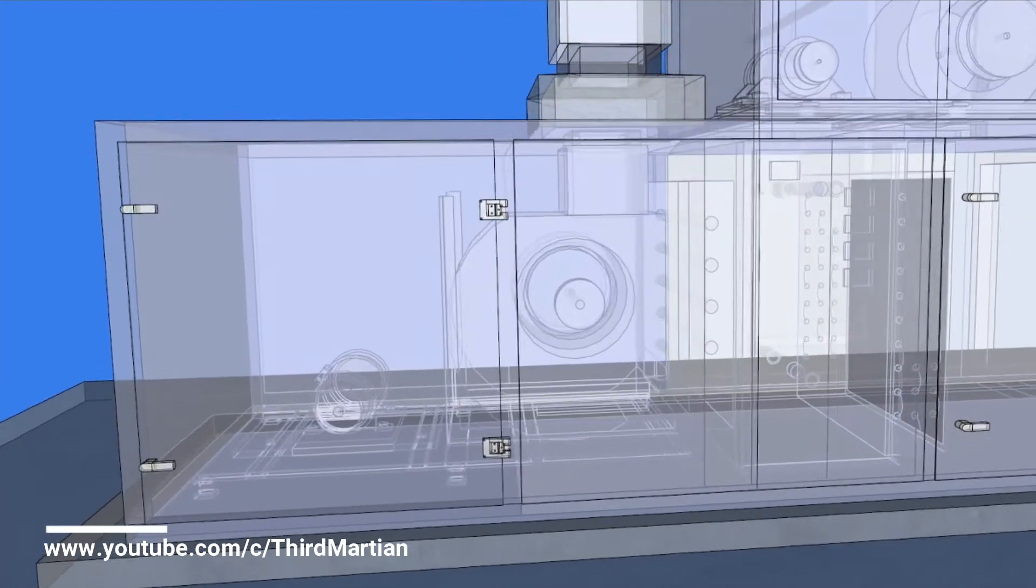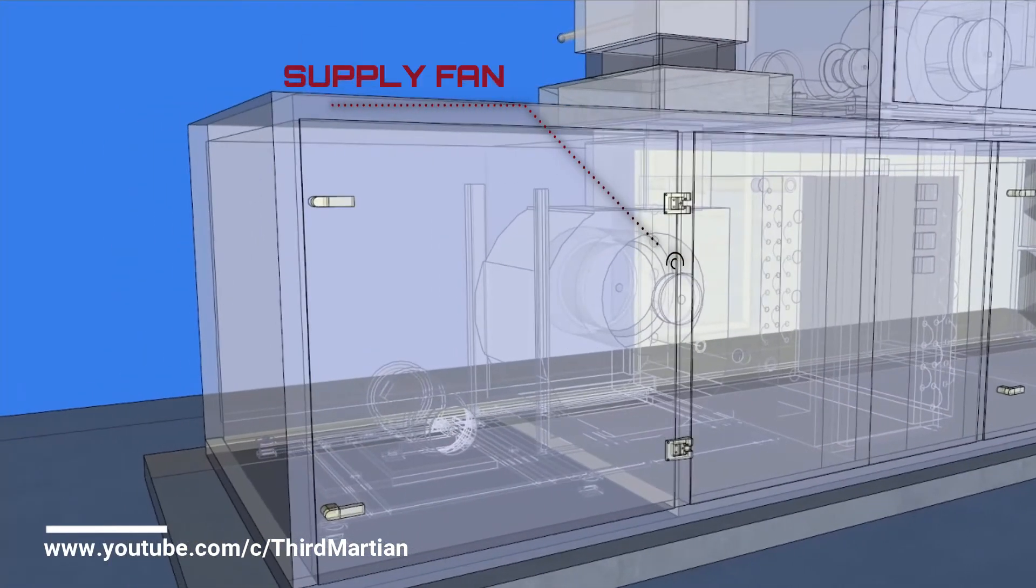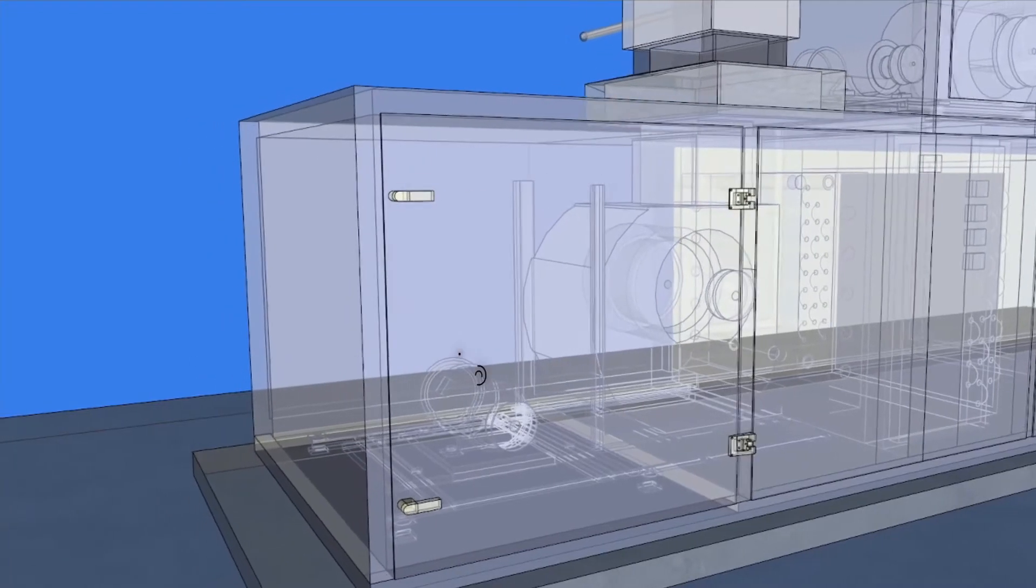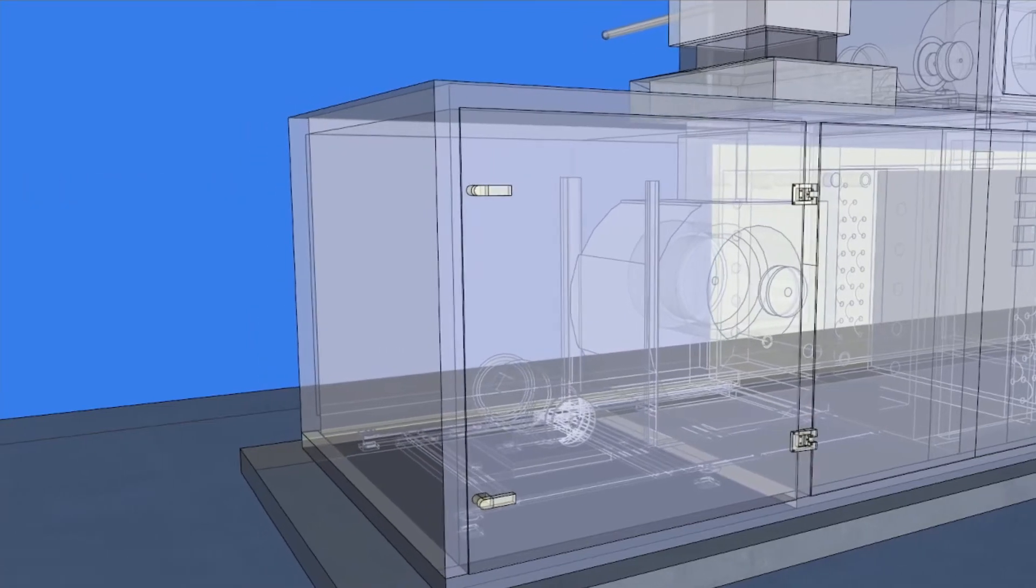Air handlers typically employ a large squirrel cage blower driven by an AC induction electric motor to move the air. The blower may operate at a single speed, offer a variety of set speeds, or be driven by a variable frequency drive to allow a wide range of air flow rates.